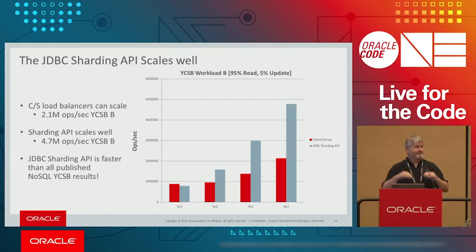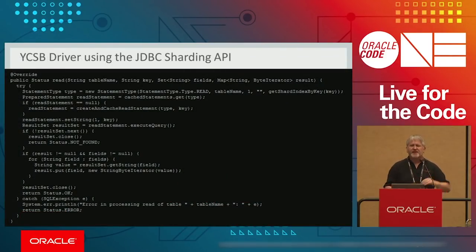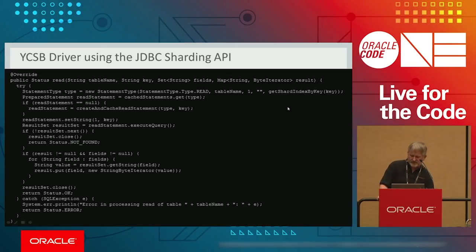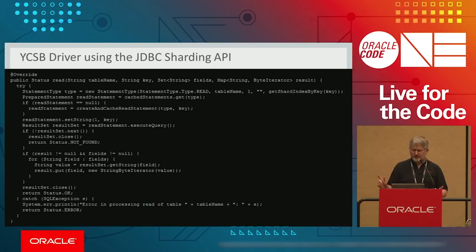For Java JDBC programmers, this code should look familiar: prepared statements, setting bind variables, executing, doing a next on the result set, checking error codes, getting values, closing the result set. That's standard JDBC. The tricky bit is up here — the statement type is getting sharding key by index and we're passing in the key. That's just the way Java JDBC has done it with the Sharding API. The net effect is 99% of your JDBC code has not changed — it's just the starting point.